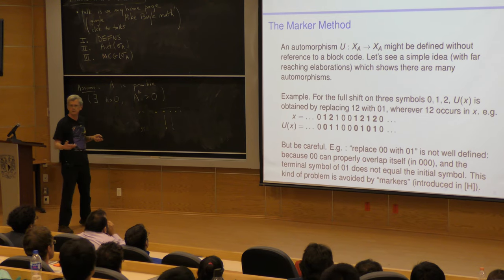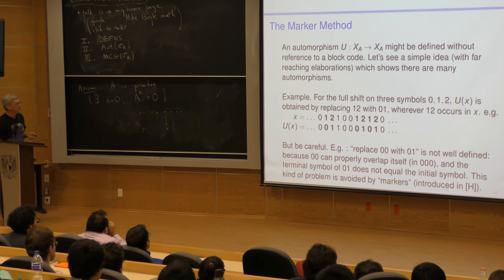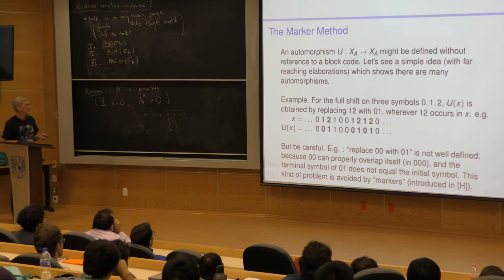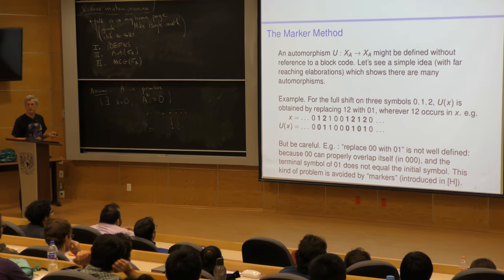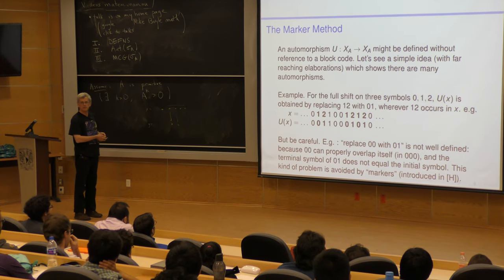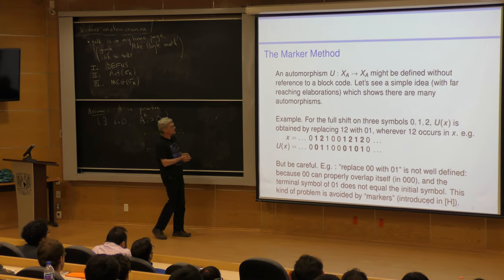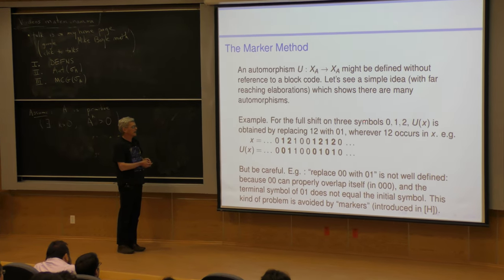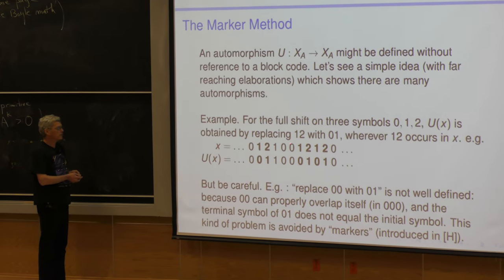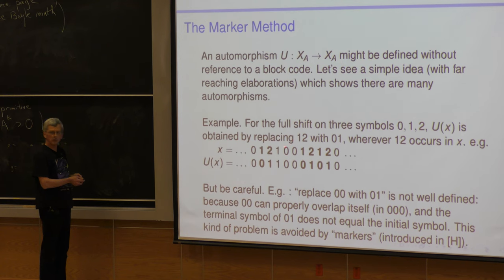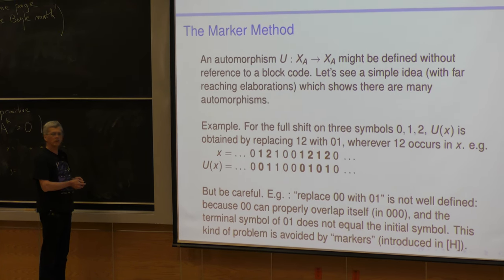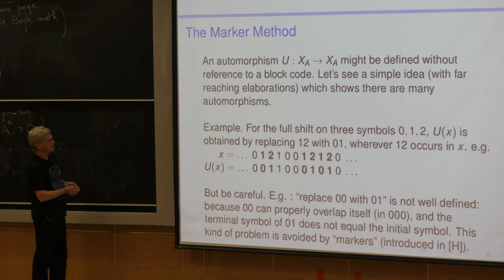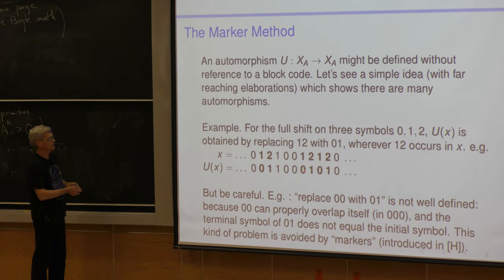Before we see that it's complicated, let's see that there's something in it — get an idea of how to find these automorphisms. A block code is a completely general way of defining one, but there may be other ways. Here's a simple version of a technique called the marker method, which can be used to show there are many complicated automorphisms. We have the full shift on three symbols 0, 1, 2. We can define a map: whenever we see the word 1, 2 occurring in a point, we replace it with the word 0, 1. So for example, here's x — there's a 1, 2; we put in 0, 1. Keep going — there's another 1, 2; put in 0, 1; etc.